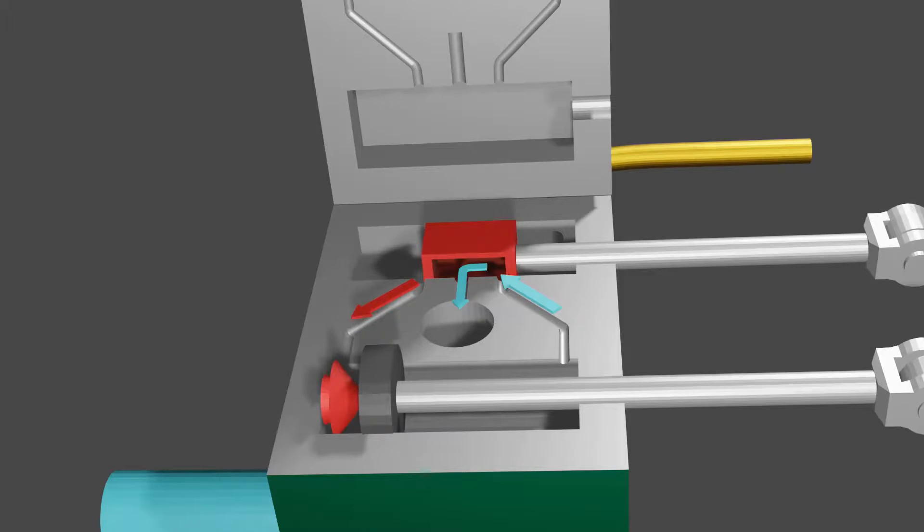The sliding valve has moved a little to the right under the control of the eccentric. Now, high pressure steam can move from the steam chest to the left side of the cylinder. At the same time, the right side of the cylinder is open to the exhaust.